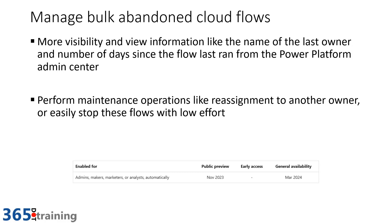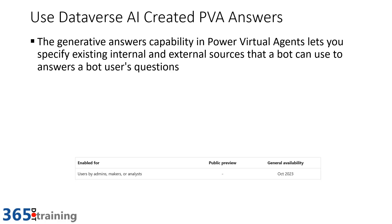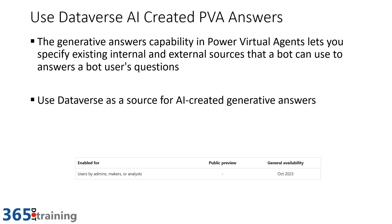For Power Virtual Agents, one highlight is the ability to use Dataverse to create answers. Power Virtual Agents already has the ability to use generative AI capability, letting the agent use existing internal and external sources to answer questions. What's coming in this release is the ability to use Dataverse as a source for those AI-generated answers, coming in general availability in October 2023.